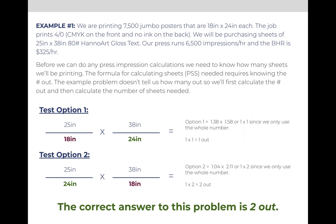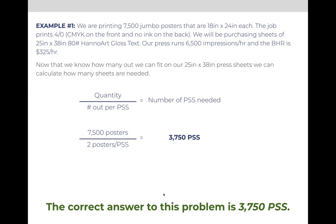Our press sheet size is 25 by 38 and our item size is 18 by 24. When we divide 25 by 18, it comes out to 1.38 or 1 whole time. And when we divide 38 by 24, it comes out to 1.58 or 1 whole time. So for option 1, we can get 1 out. If we rotate the jumbo postcards, 24 goes into 25 1.04 times or 1 whole time, and 18 goes into 38 2.11 or 2 whole times. 1 times 2 means option 2 produces 2 out. 2 is greater than 1, so for this problem we would say that we can run 2 out. Knowing we can run 2 out, we can now calculate the number of press sheets needed. We are producing 7,500 jumbo postcards — divide by 2 per press sheet — that means we need 3,750 press size sheets.